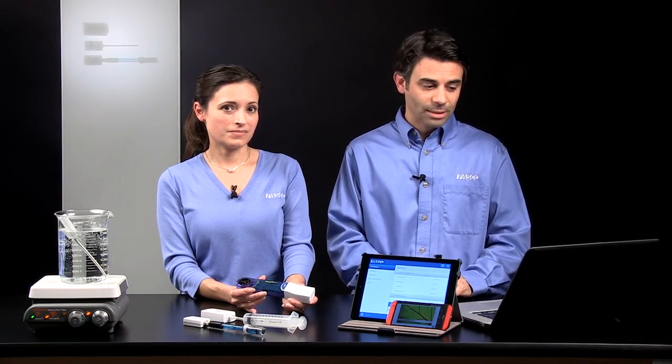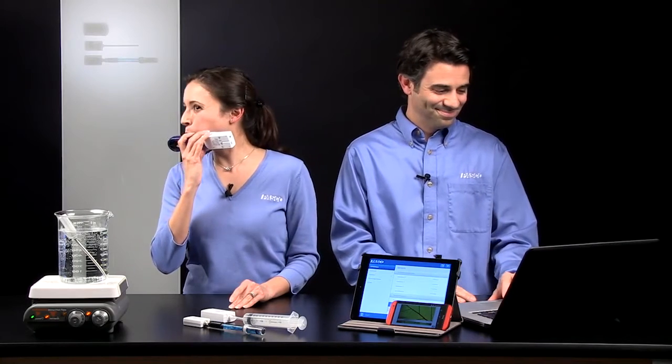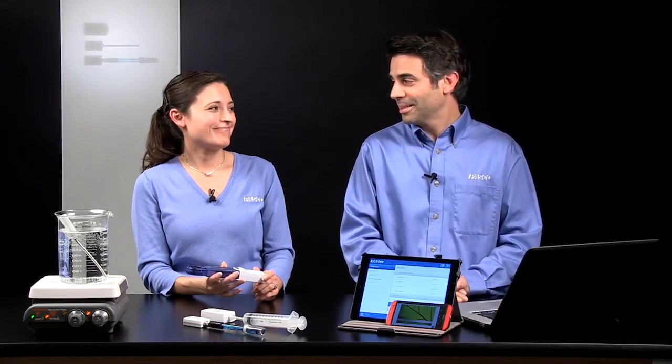And this is one of the advantages of those passport sensors is they can be multi-measure. So now I see all those measurements available. I'm going to touch wind speed. And we're going to quickly generate some data.